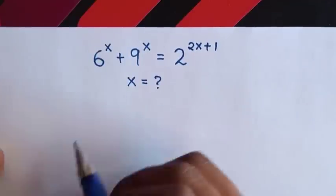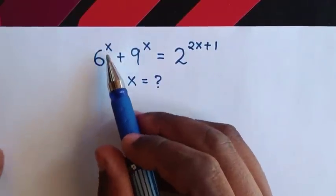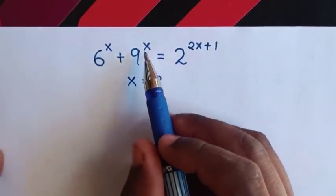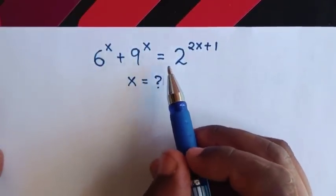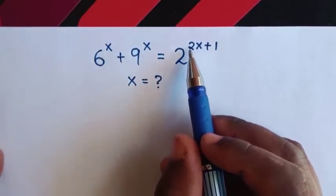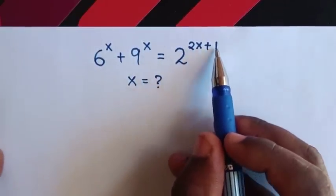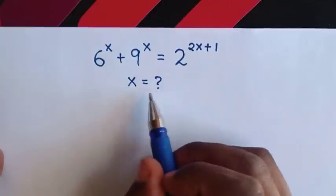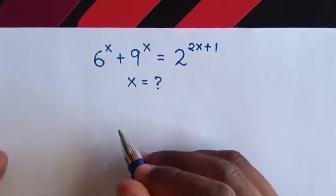Hello! How to solve 6 power x plus 9 power x is equal to 2 power of 2x plus 1, to find the value of x?